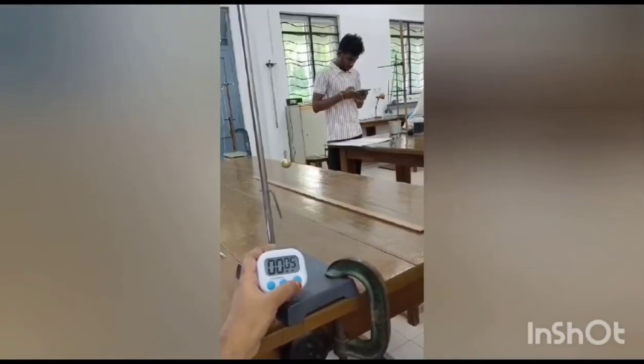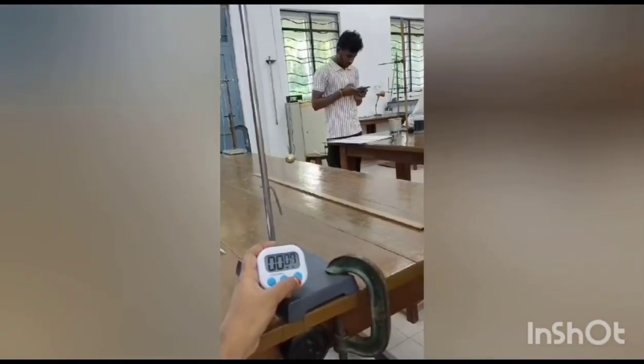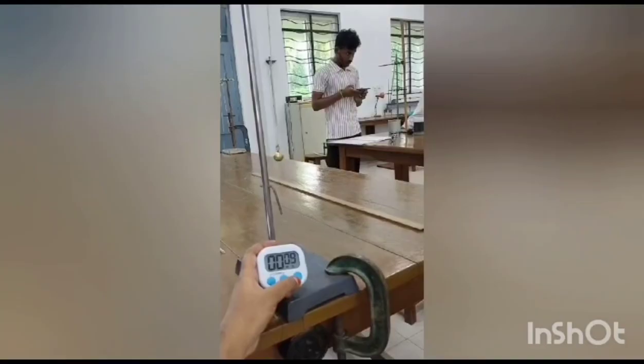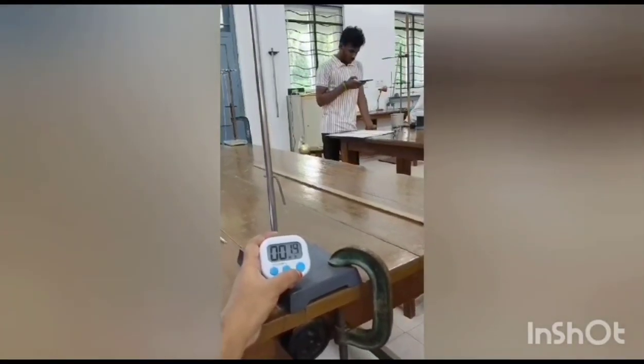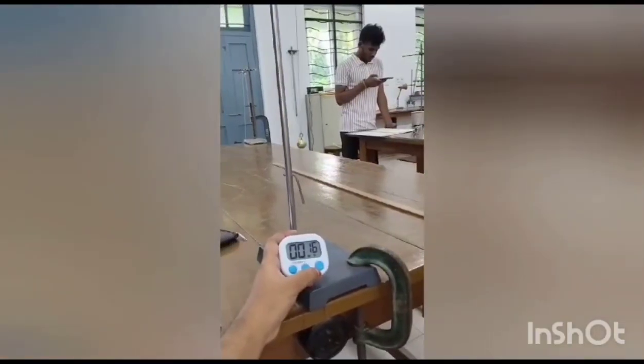The objective of this experiment is to determine time period where T equals 2π times square root of L by g. We should plot a graph between L and T squared with the help of this.